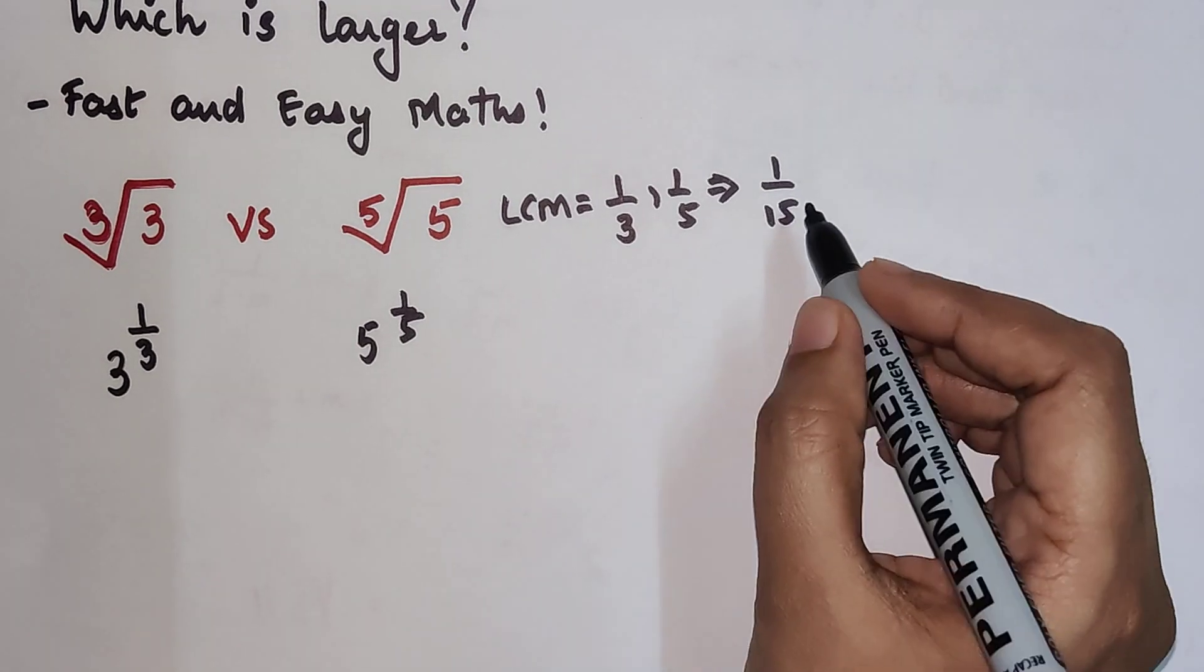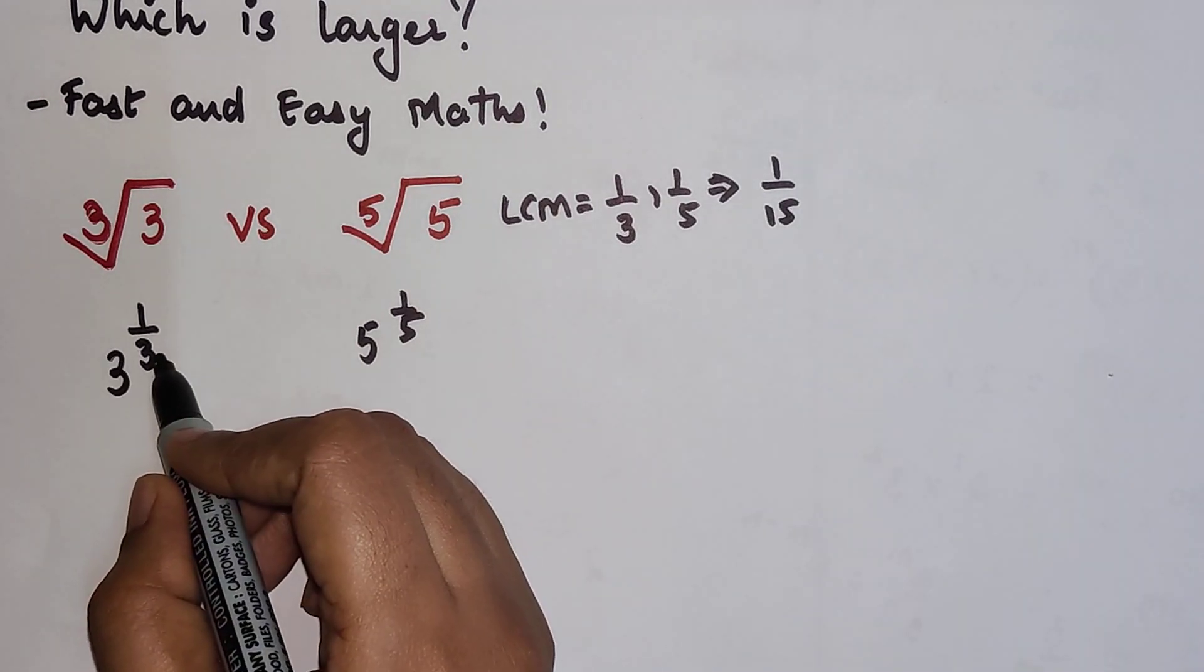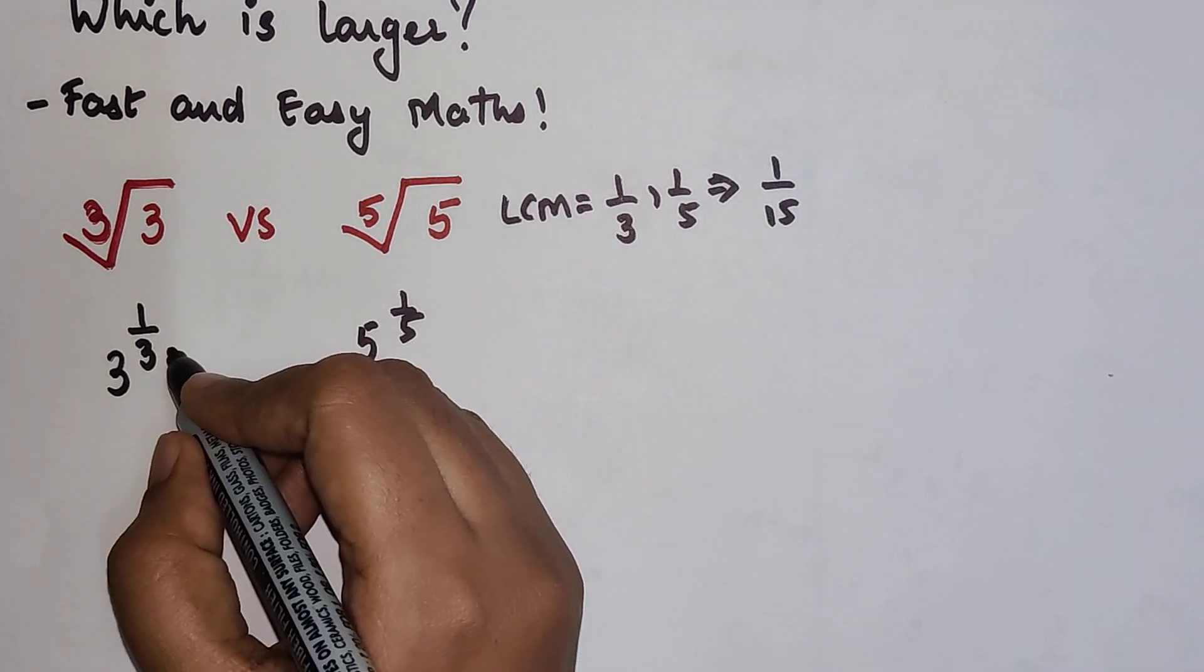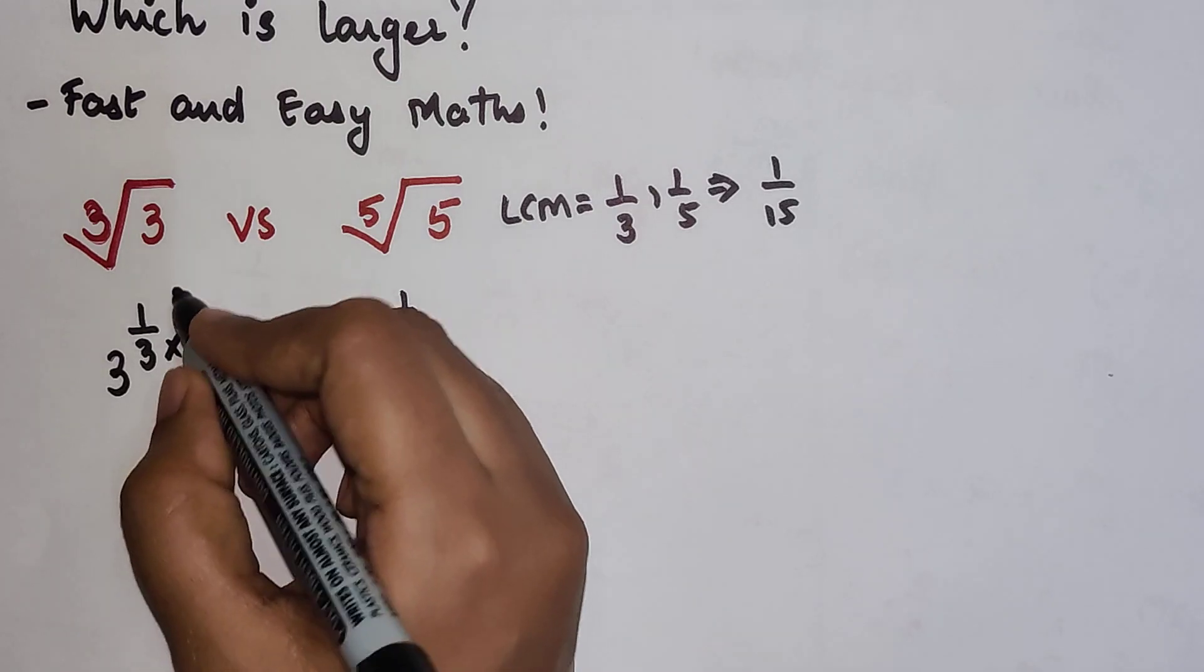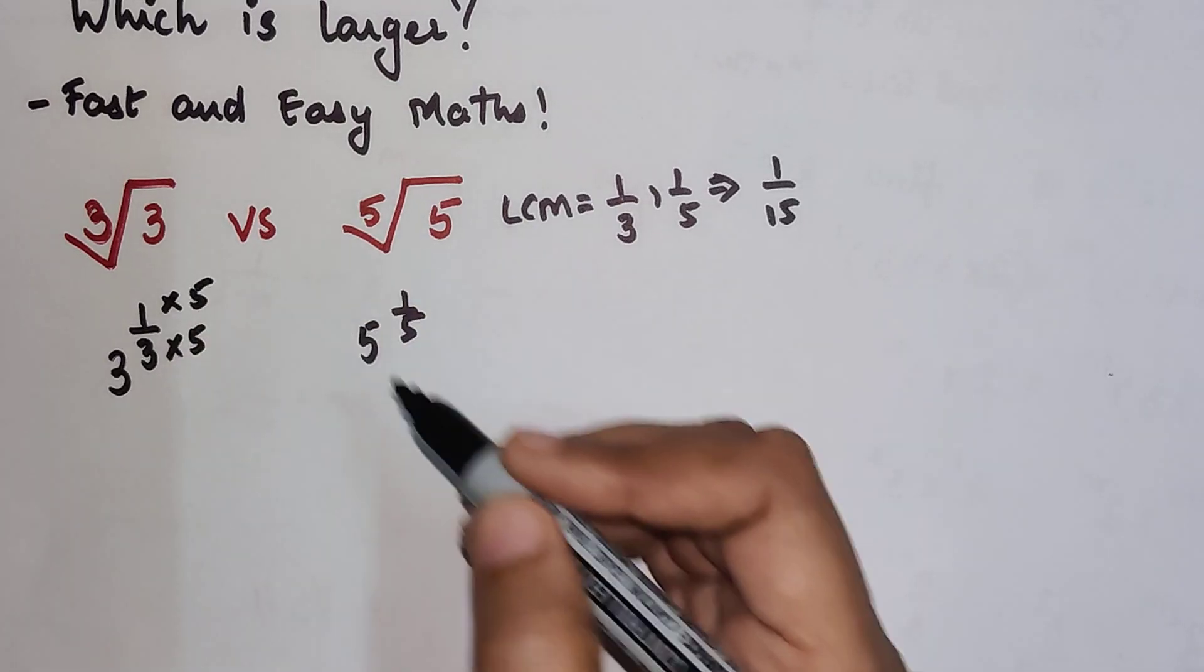Now in order to make the denominator over here as 15, what you have to do is multiply this by 5, and you multiply the numerator by 5.